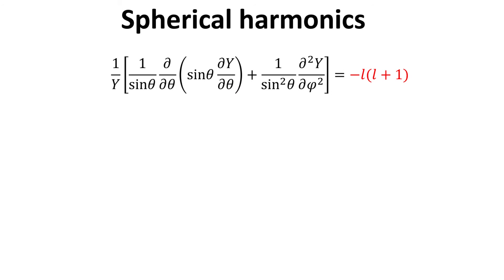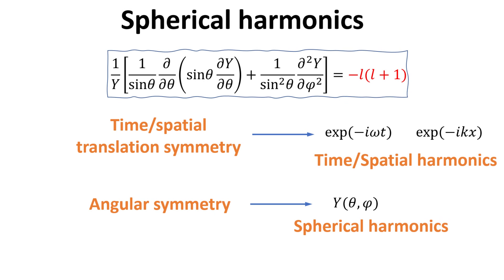This angular equation was first solved by Laplace in connection with the problem of gravitation. Recall we arrived at this equation by imposing angular symmetry. Just like when time and spatial translation symmetry in the Schrödinger equation results in spatial and time harmonics in the solution, we have an analogous spherical harmonics due to the angular symmetry of the problem. The form of this spherical harmonics, however, is more than just a simple complex exponential which we shall see now.